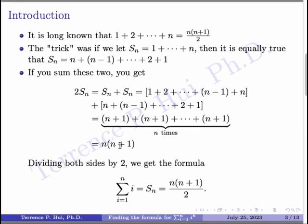Keeping in mind, n times n plus 1 is more than what I need, because I need S of n. This is twice of what I need, so divide both sides by 2. When you divide both sides by 2, you quickly establish your formula, which is the sum of i to the first power is n times n plus 1 over 2. This is a very well-known formula that you've probably learned somewhere in your math education.